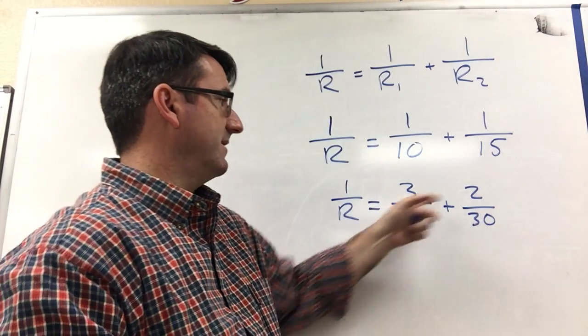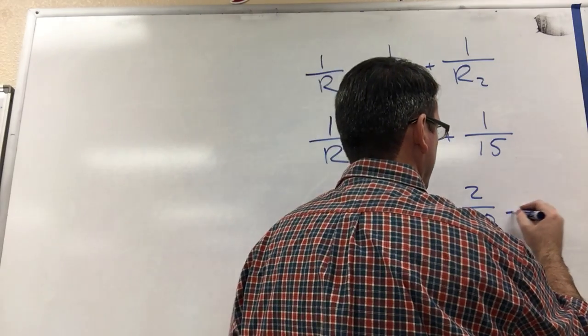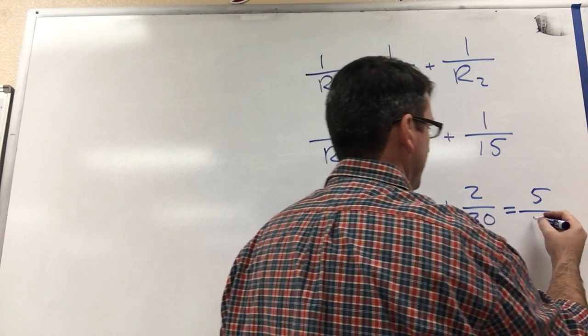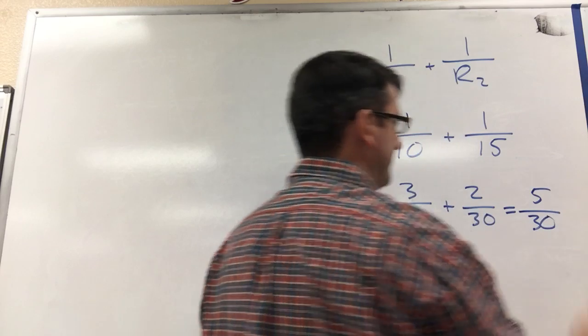Now we can add these together, just add the numerators. 3 plus 2 is 5, and keep the denominator as it is, 5 thirtieths.